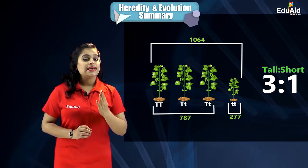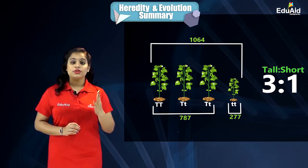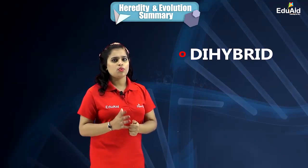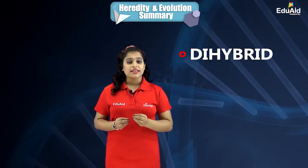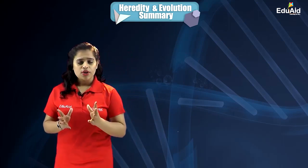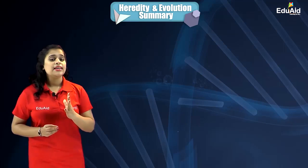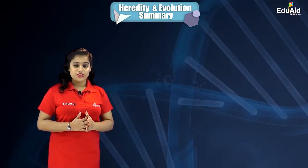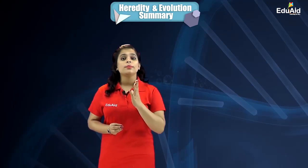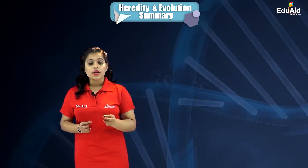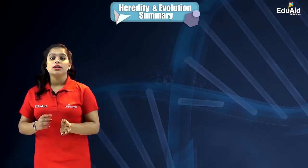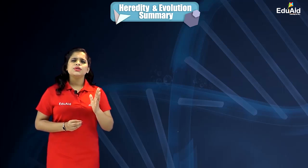In dihybrid inheritance, which involves the inheritance of two pairs of contrasting characteristics at the same time, we learned that in the first filial generation both parental traits combine and only the dominant trait shows up.